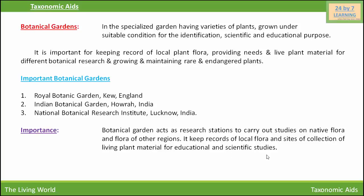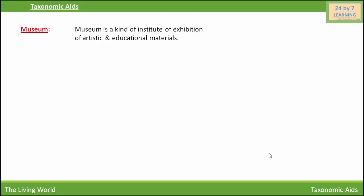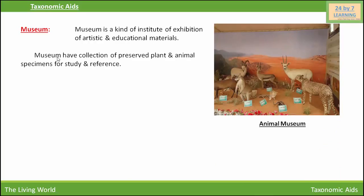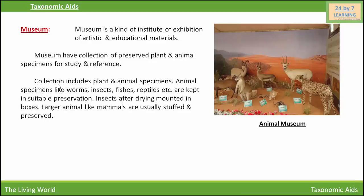A museum is a kind of institute for the exhibition of artistic and educational materials. Museums have collections of preserved plant and animal specimens for study and reference. Animal specimens like worms, insects, fishes, reptiles, etc. are kept in suitable preservation. Insects, after drying, are mounted in boxes.